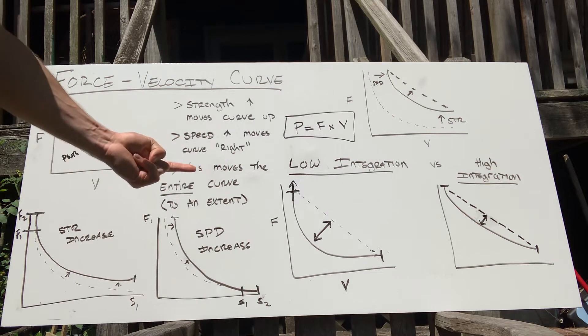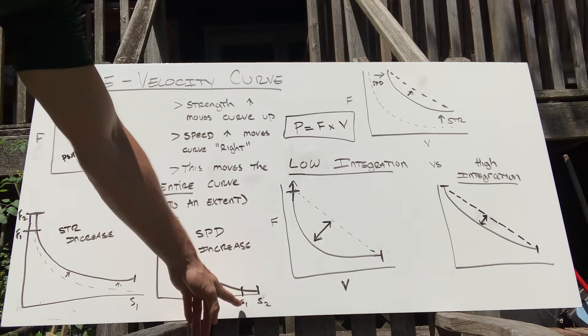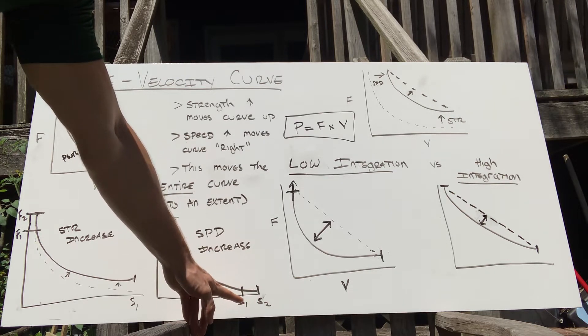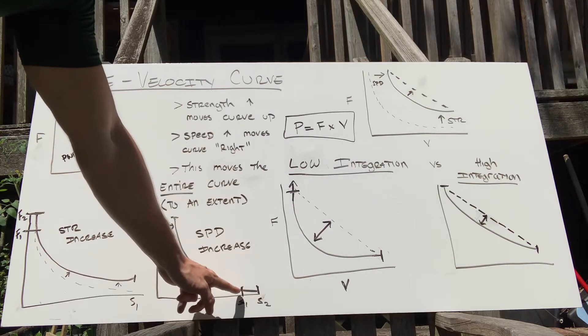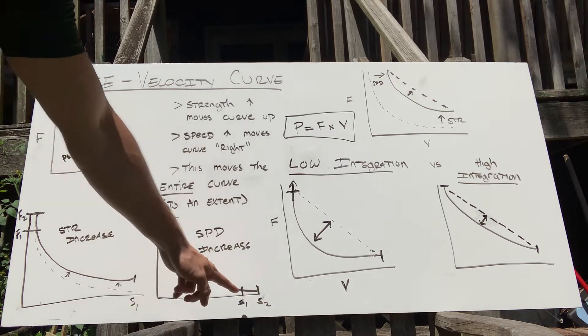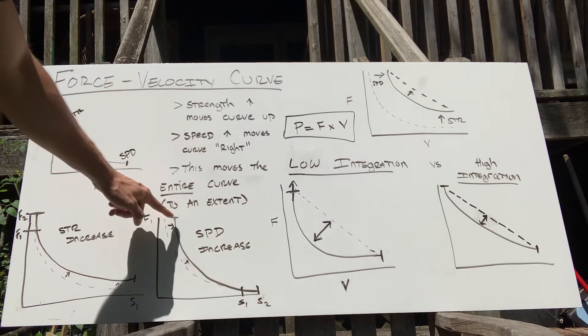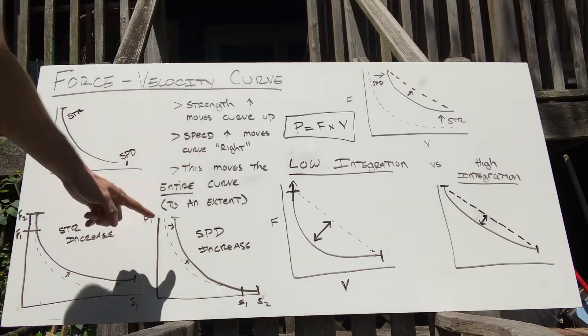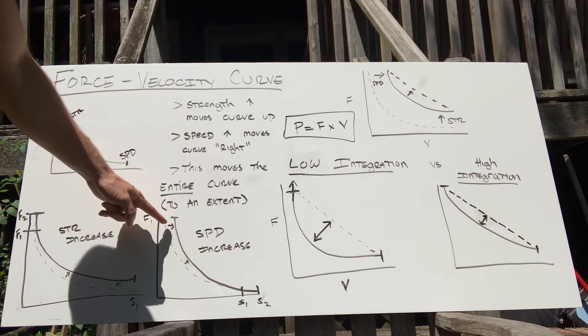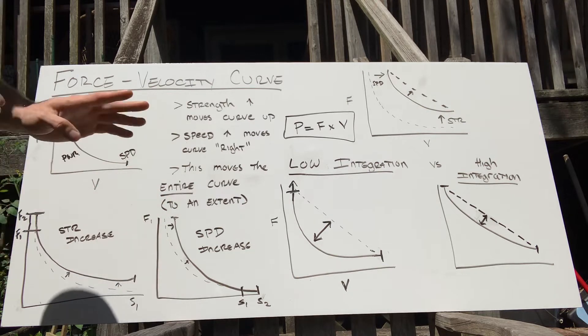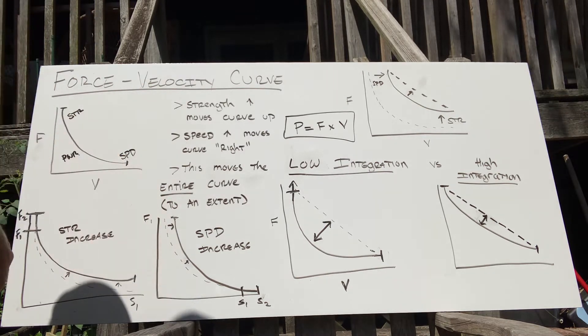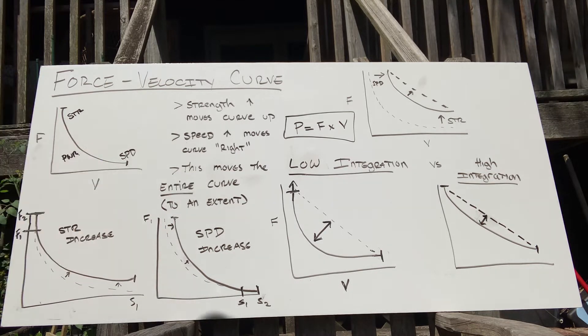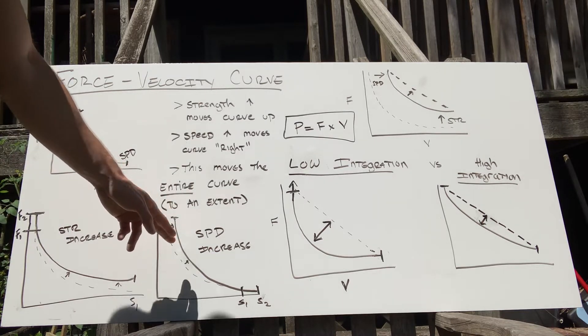When you increase speed, you move the force-velocity curve to the right. S1 is how fast you originally were. You add a few seconds to your 40-yard dash, increase your vertical jump, and you get to S2. The dotted line is where you were, the solid line is where you are now. You didn't increase force here—you're producing the same amount of force, you're just doing it faster now. That one rep max back squat might not have improved, but you can probably finish it sooner now. In practice you'll probably actually increase your force a little bit just by getting faster. These things don't tend to happen purely this way, especially with a beginner, but in theory this is how you should be looking at it.